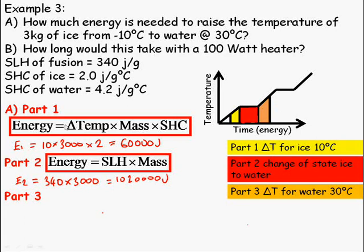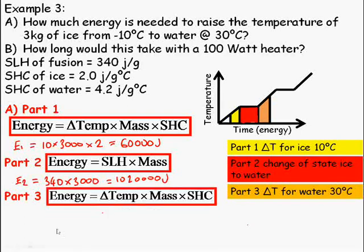Part 3 is back to changing temperature. Energy is equal to temperature change times mass times specific heat capacity. This time, don't make the mistake of using the wrong specific heat capacity. So this time the temperature change was from 0 degrees to 30 degrees, 30 degrees, times by the mass, still 3 kilograms, or 3,000 grams, times by 4.2 joules per gram per degree Celsius, which is the specific heat capacity of water. Gives us this new number.